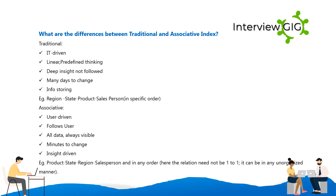The differences between traditional and associative indexing: Traditional is IT-driven, linear, and predefined thinking — deep insight is not followed, many days to change, info stored in a specific order (e.g., region, state, product, salesperson). Associative is user-driven, follows the user, all data is always visible, minutes to change insight — driven by the user (e.g., product, state, region, salesperson) in any order. The relationship need not be one-to-one; it can be in any unorganized manner.